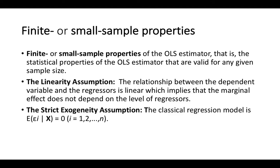The first finite sample property is the assumption of linearity. The relationship between the dependent variable and the independent variables (regressors) is linear, which implies that the marginal effects do not depend on the level of the regressors. So irrespective of the value of X, the relationship is linear — it is the same.